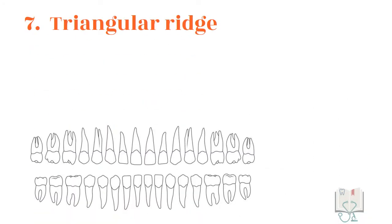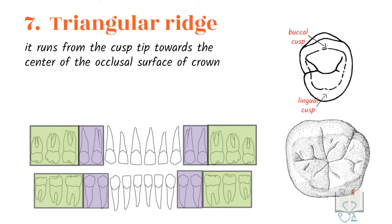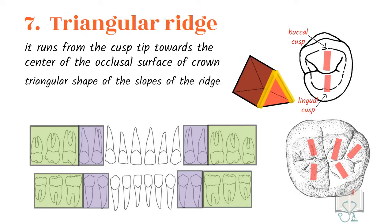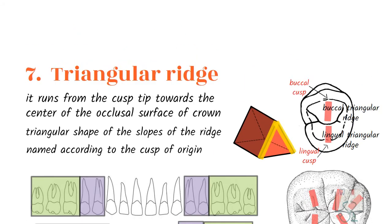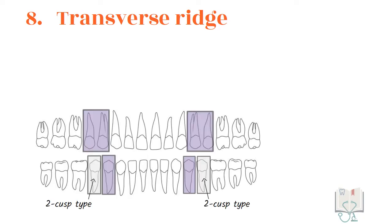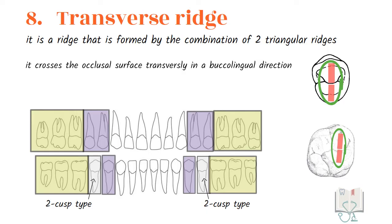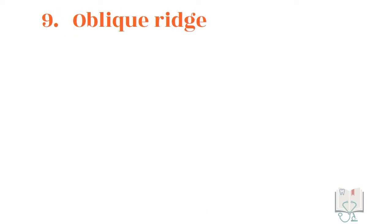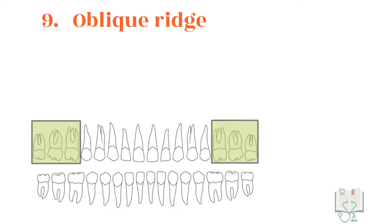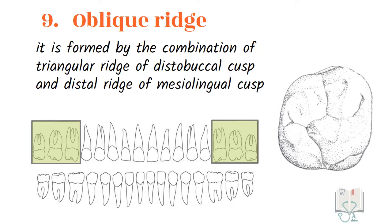The triangular ridge is present in all premolars and molars, running from the cusp tip towards the center of the occlusal surface. They are named according to the cusp from which they originate, such as buccal triangular ridge or lingual triangular ridge. The transverse ridge, also seen in all premolars and molars, is formed by the combination of two triangular ridges and crosses the occlusal surface transversely in the buccolingual direction. The oblique ridge is present on all maxillary molars, formed by the combination of the triangular ridge of the distobuccal cusp and the distal ridge of the mesiolingual cusp, crossing the occlusal surface obliquely.